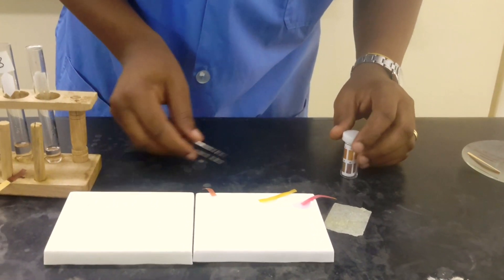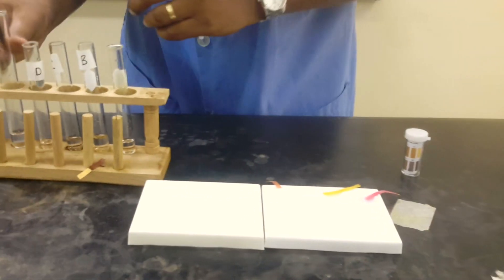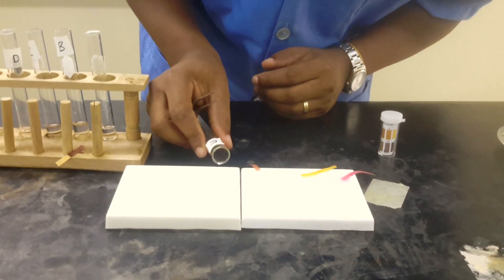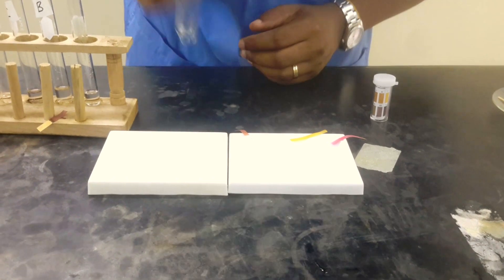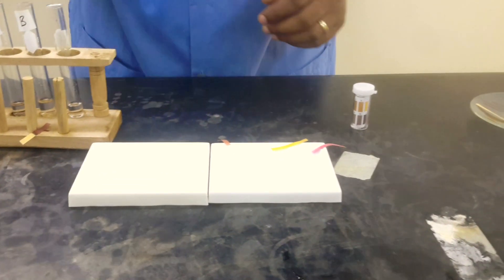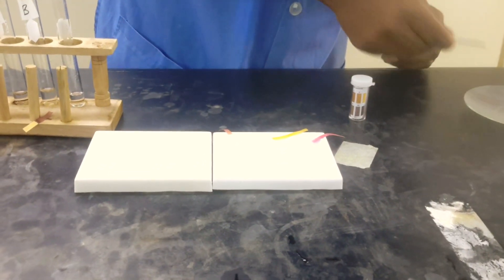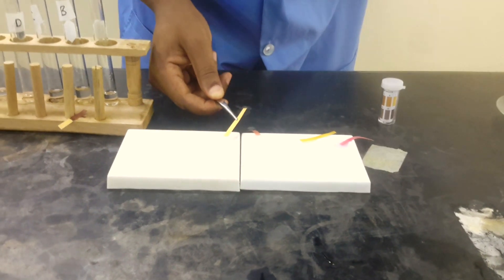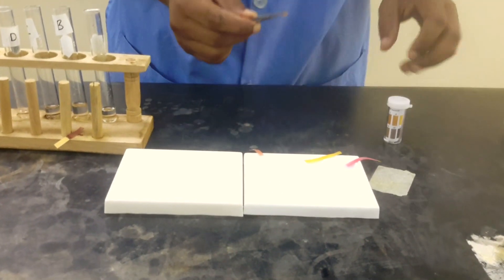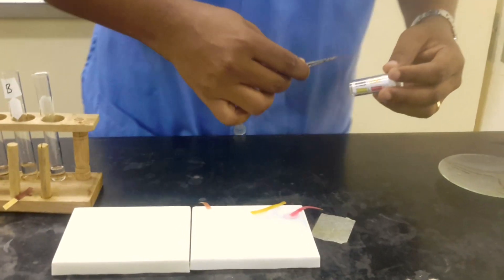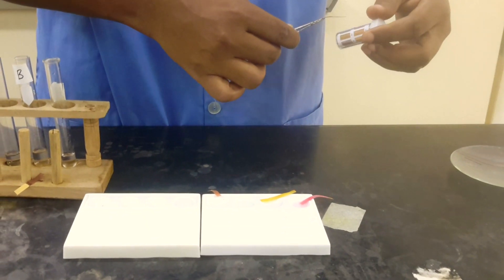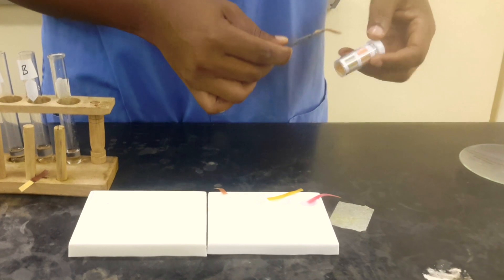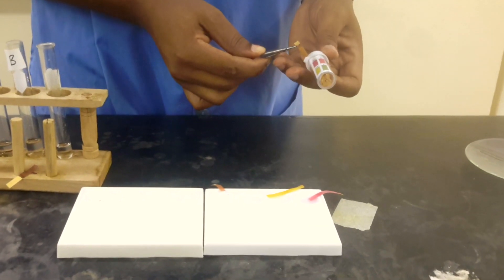We'll do the same thing for the last one. So we pour a small amount of E. I'm not going to touch it. So as the color changes, we will just go right away and find which color this matches.